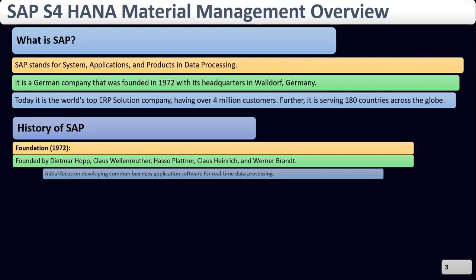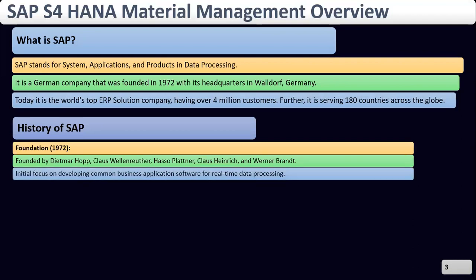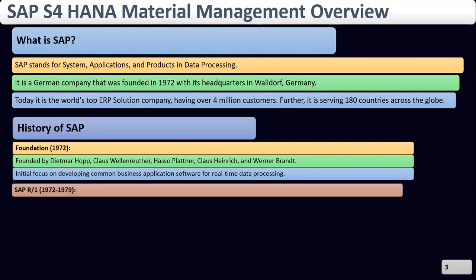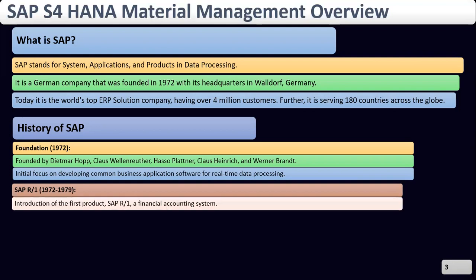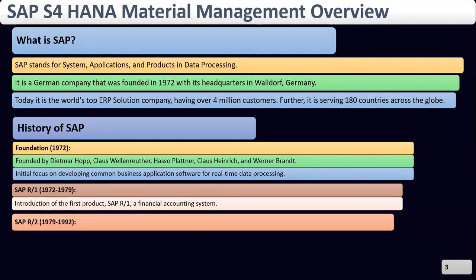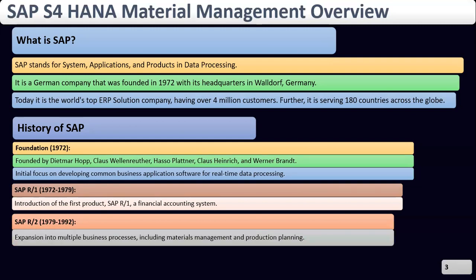Now we are going to discuss the history of SAP. Founded in 1972, SAP's headquarters are in Germany. They focused on developing common business applications for real-time data processing. From 1972 to 1979, they introduced the first product SAP R/1 for financial accounting systems. From 1979 to 1992, they expanded into multiple business processes including material management and production planning.